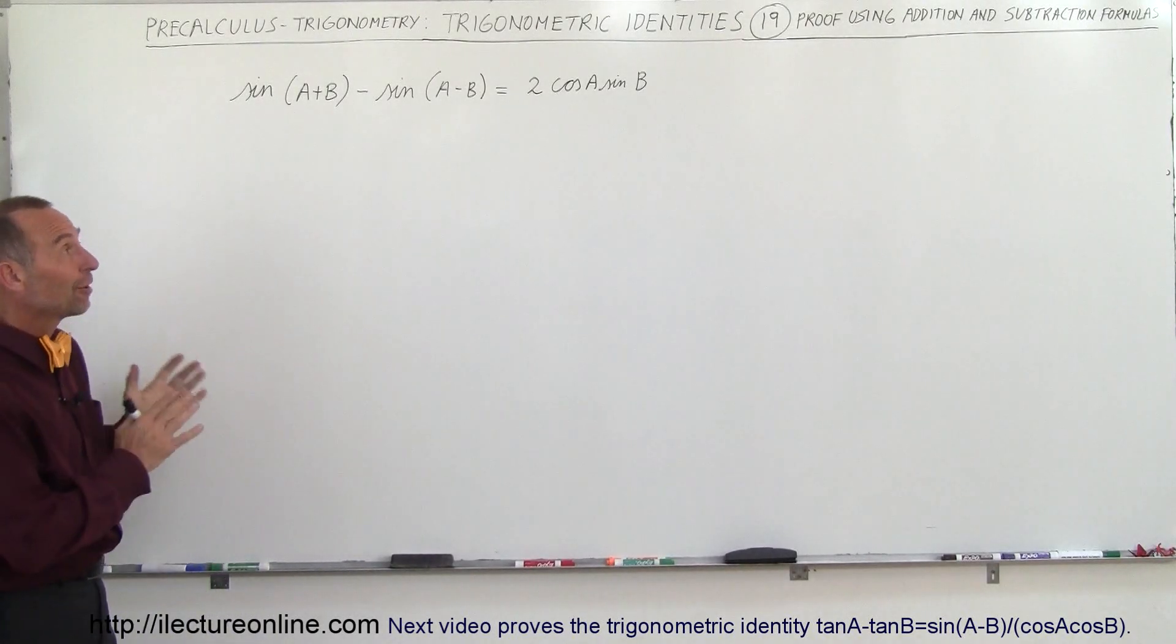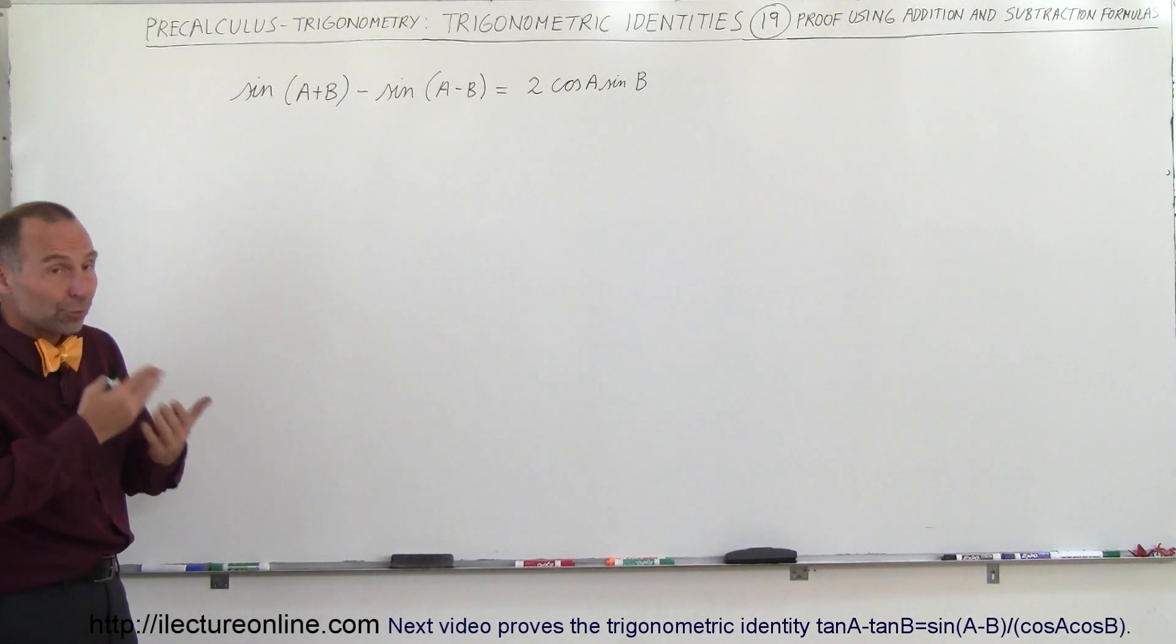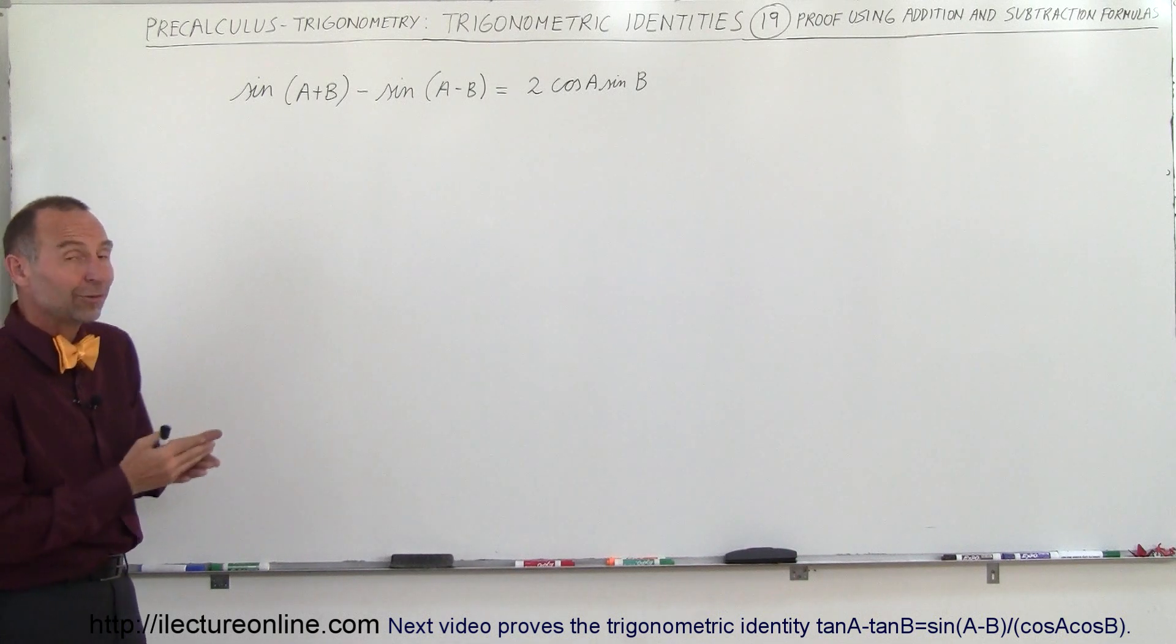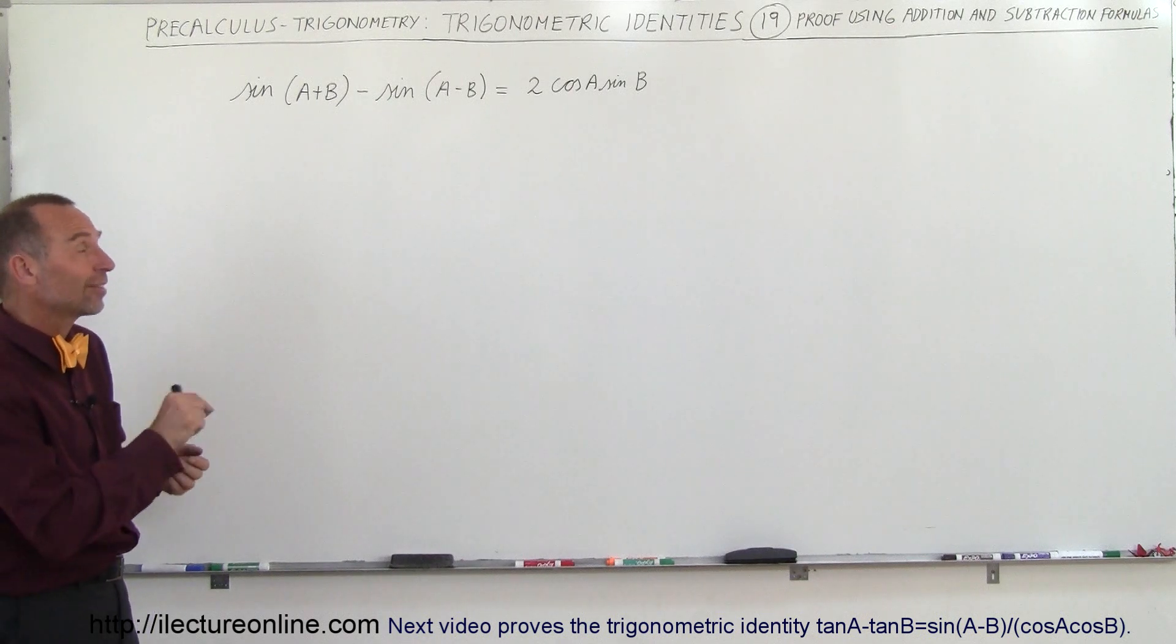Welcome to ElectronLine and now we're going to do a very interesting exercise. Again, we're going to prove an identity that the sine of A plus B minus the sine of A minus B is equal to 2 times the cosine of A times the sine of B.